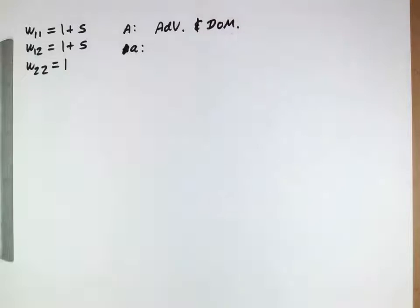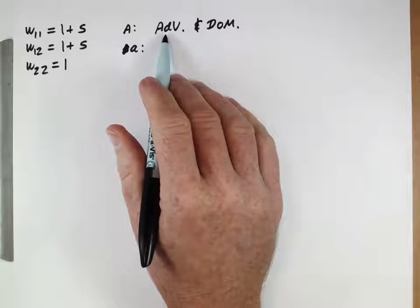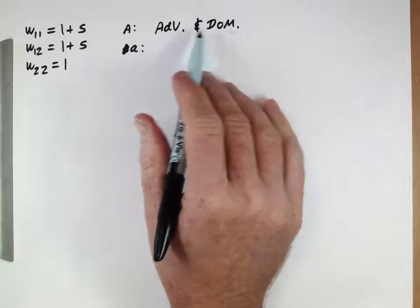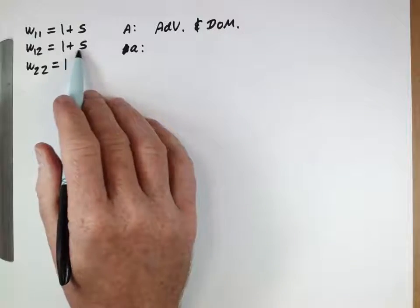So, again, to point out, advantageous is not the same thing as dominant. They're two separate things that have to do with the fitness of the heterozygote.